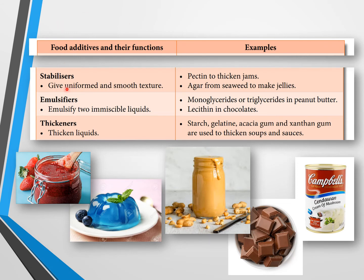The fourth type is stabilizers. Stabilizers give food a uniform and smooth texture. For example, pectin is used to thicken jams, and agar — derived from seaweed — is used to make jelly. Agar-agar is a well-known example of a stabilizer.